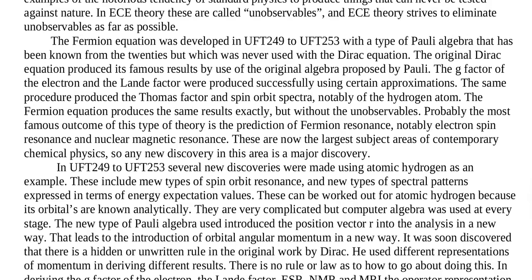The Fermion equation was developed in UFT 249-253 with a type of Pauli algebra that has been known from the 1920s but which was never used with the Dirac equation. The original Dirac equation produced its famous results by use of the original algebra proposed by Pauli. The g-factor of the electron and the Landé factor were produced successfully using certain approximations, and the same procedure produced the Thomas factor and spin-orbit spectra, notably of the hydrogen atom. The Fermion equation produces the same results exactly but without the unobservables.